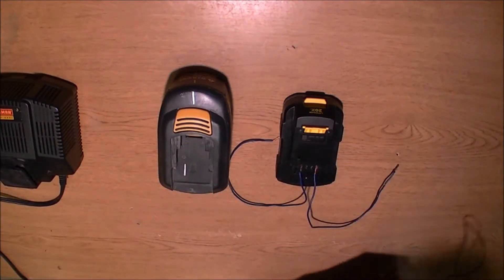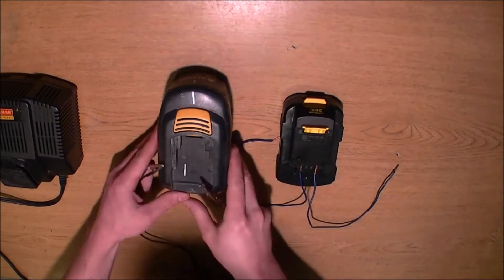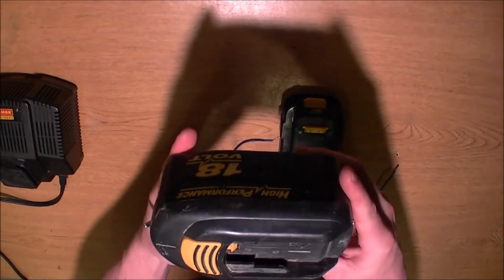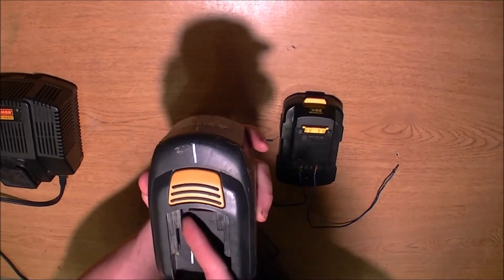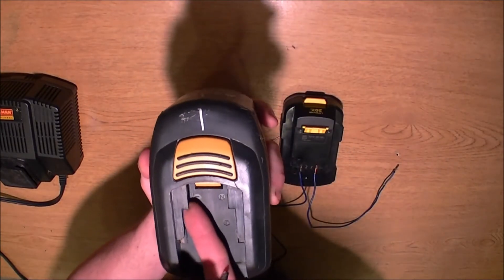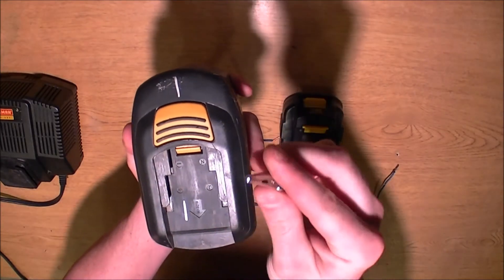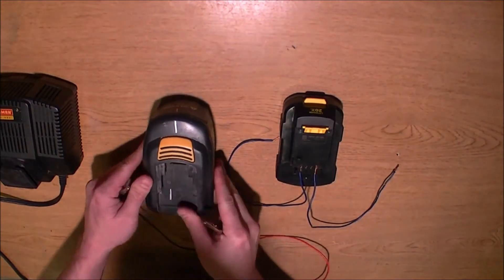Alright, now on the battery itself, this terminal, this particular one is a Craftsman 18 volt. On this side right here it shows the negative sign but the terminal is underneath. So that's why I'm using these little alligator clips. So positive,